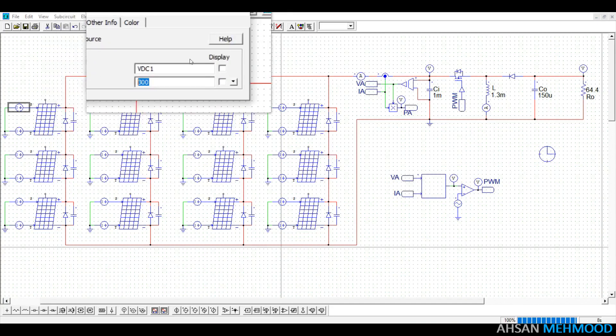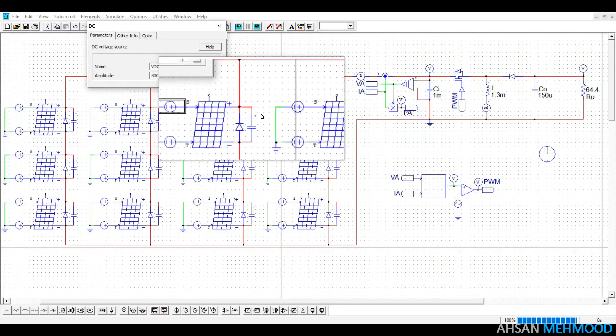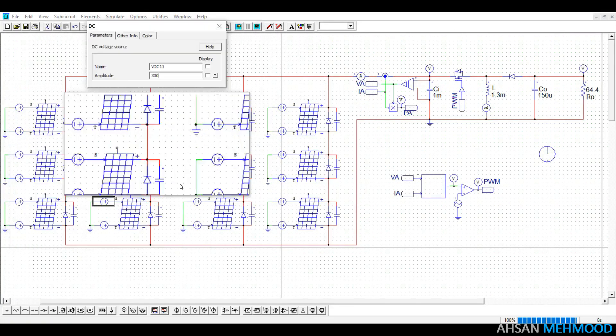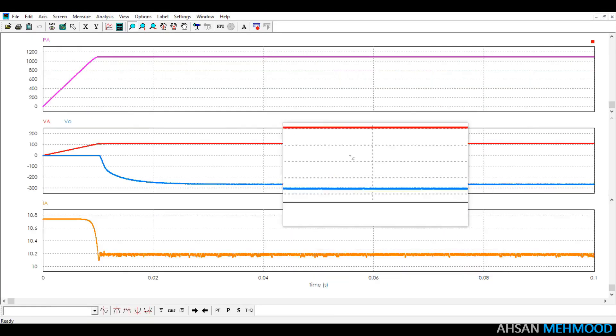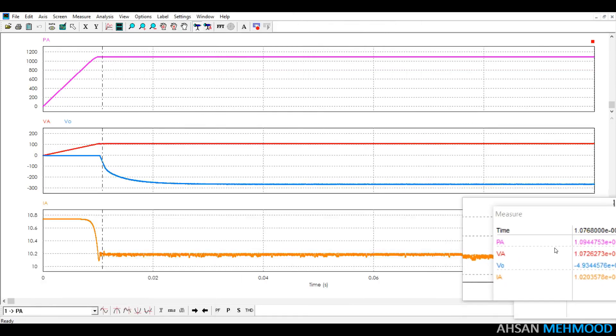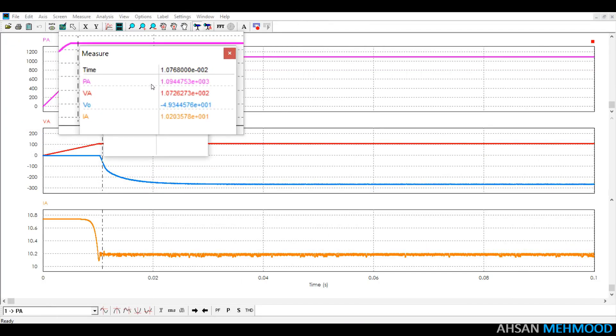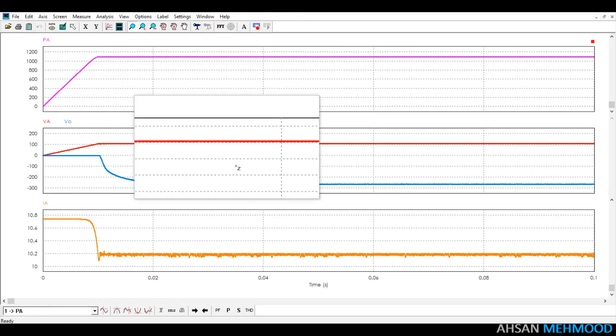Under lower irradiation values, for example 300W per meter square, the performance of the design converter can also be tested. As can be seen in the graphs, maximum power which is 1094W at 107V is already being tracked. And waveforms have very few ripples even at lower irradiation values.